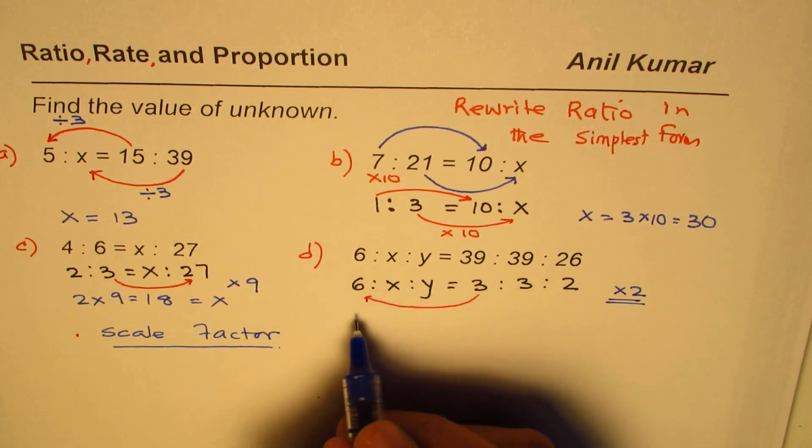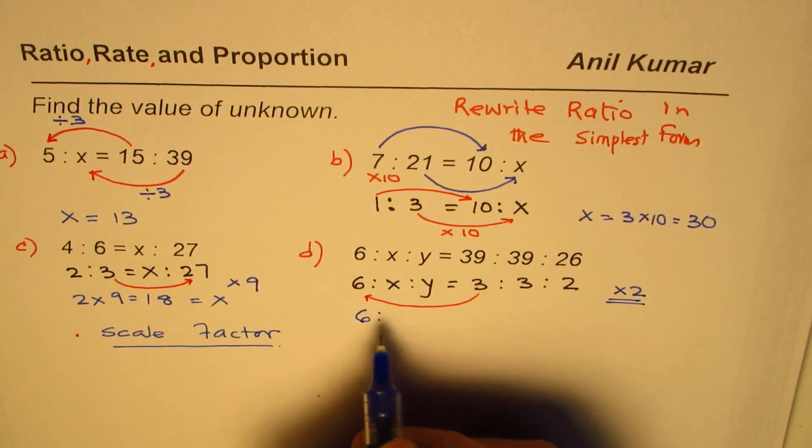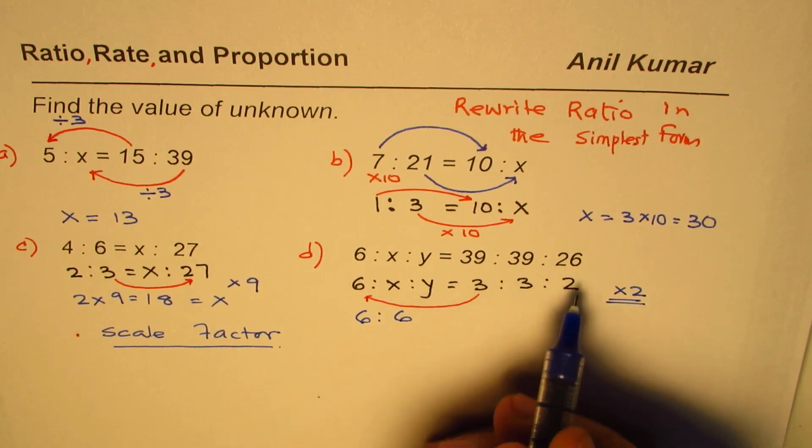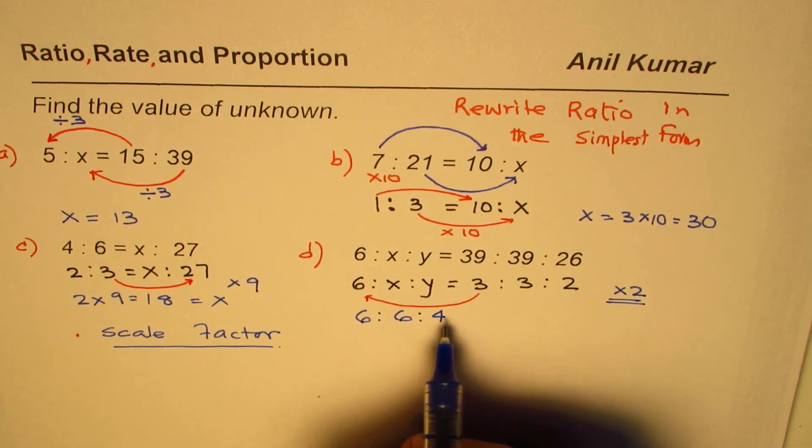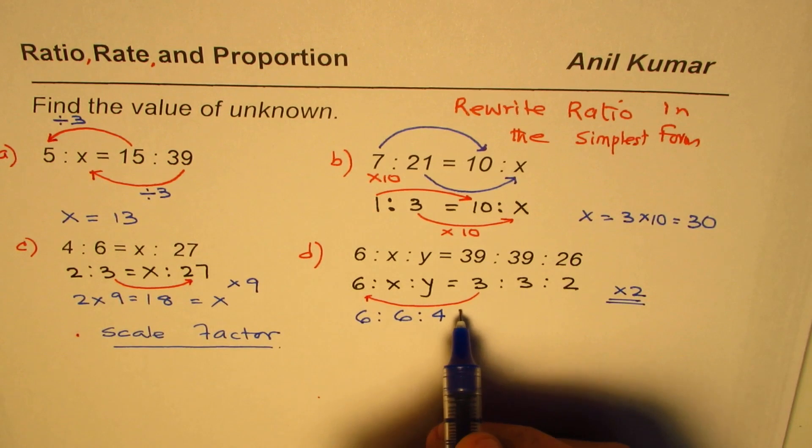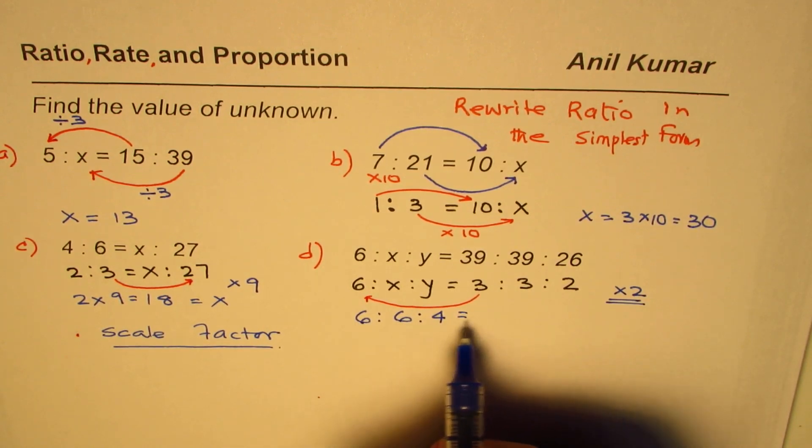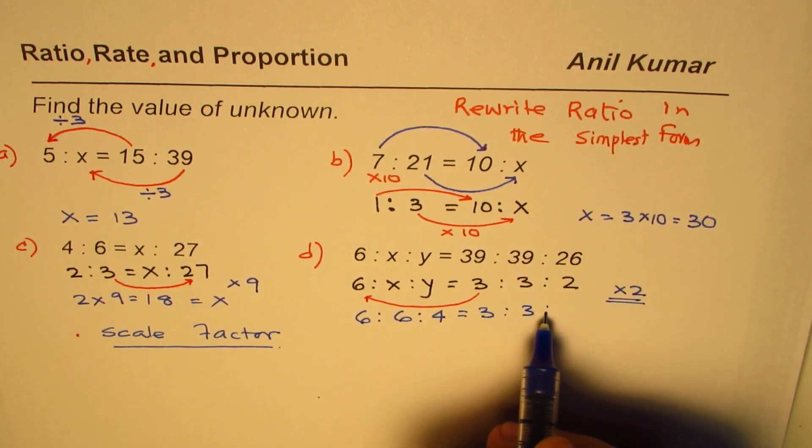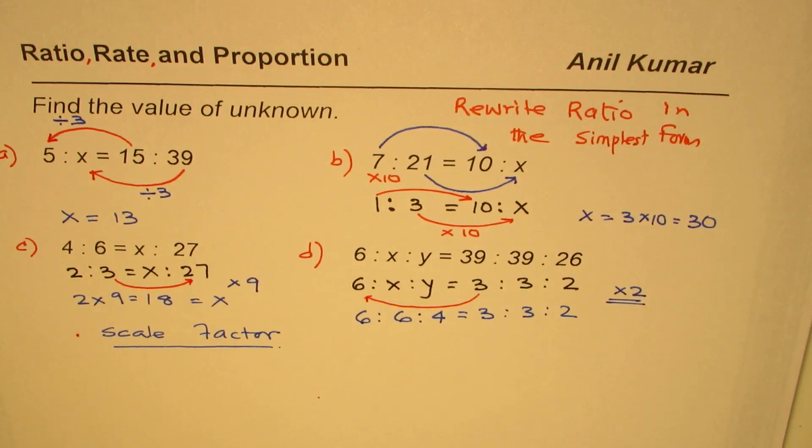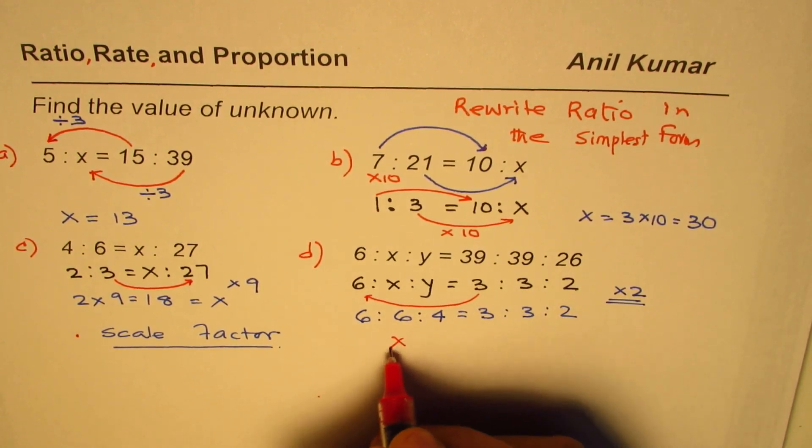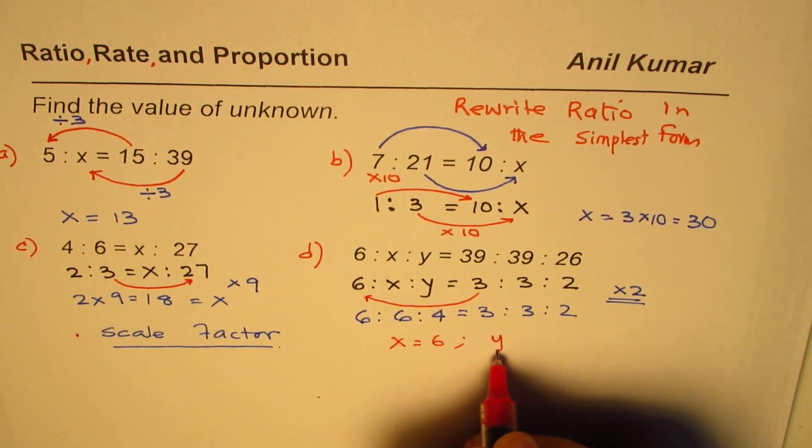So we could multiply each by 2 to get the other terms. So we get our answer. 6 is to, well that is same, 6, 3 times 2, and 2 times 2 is 4. So that is what we get. So the ratio is 6 is to 6 is to 4 to get 3 is to 3 is to 2. So in this case, what we find is that x equals to 6 and y is equal to 4.